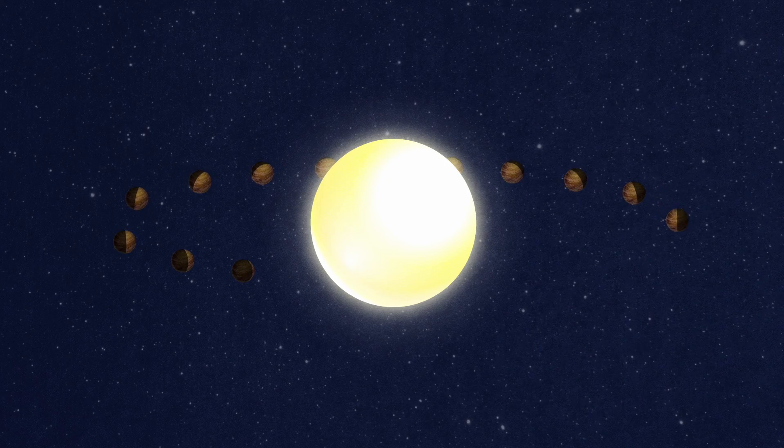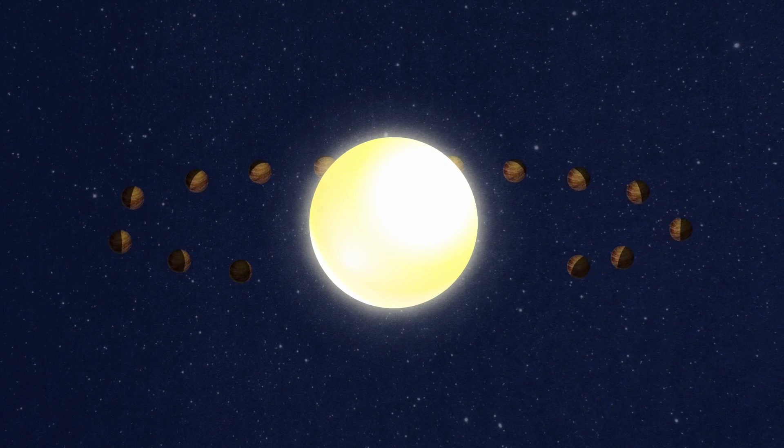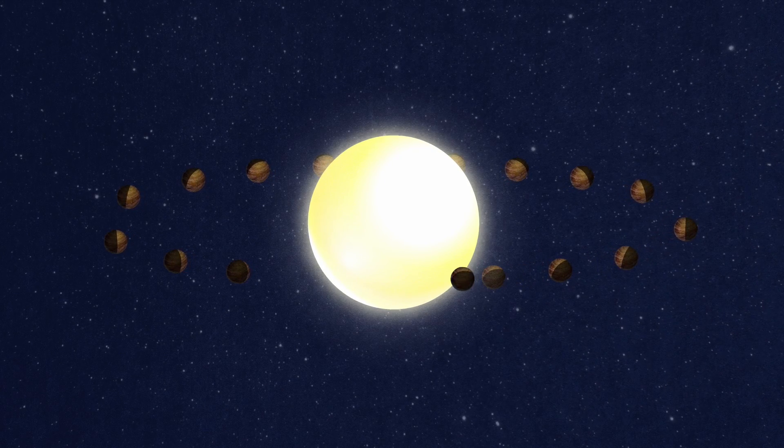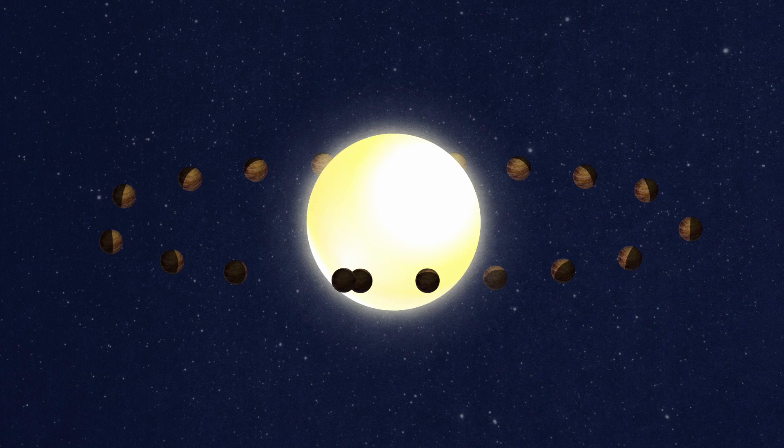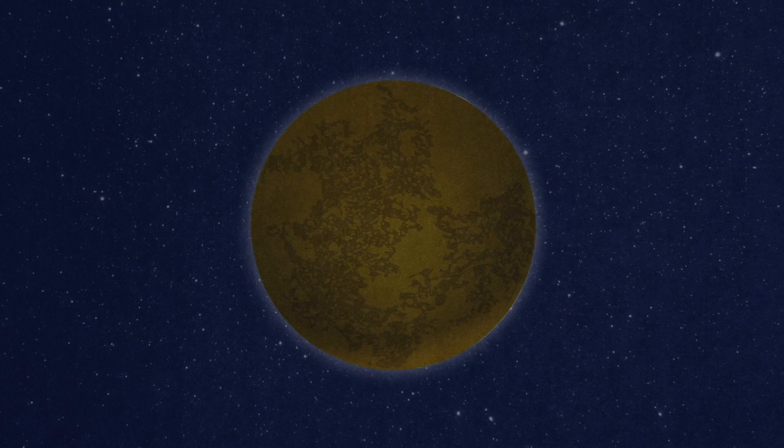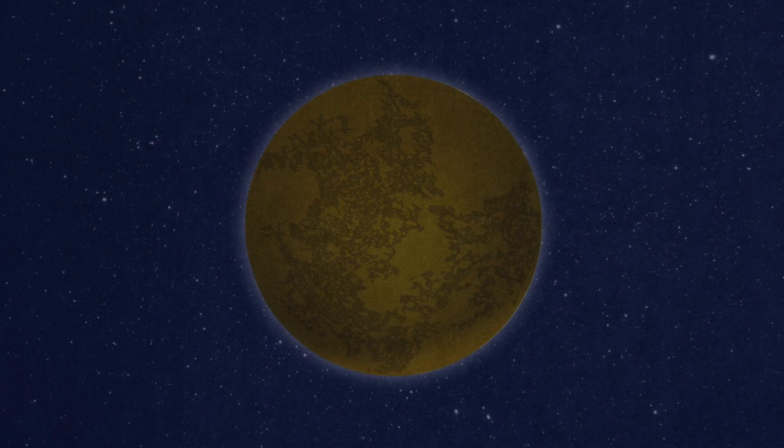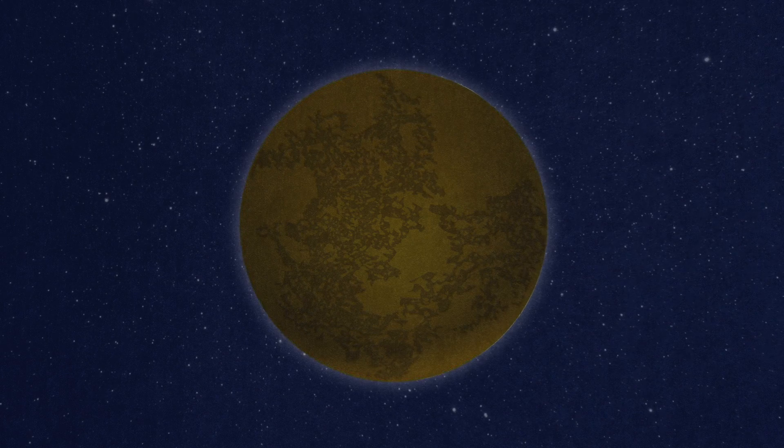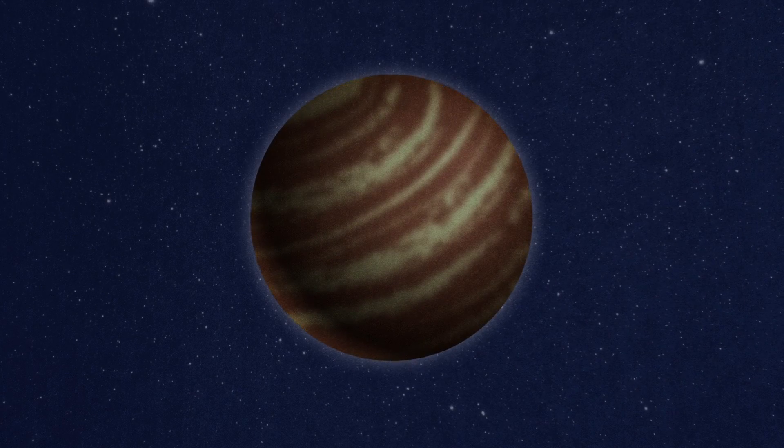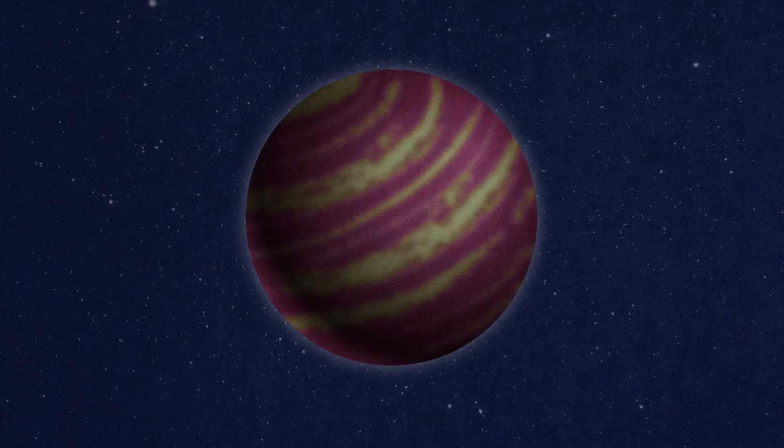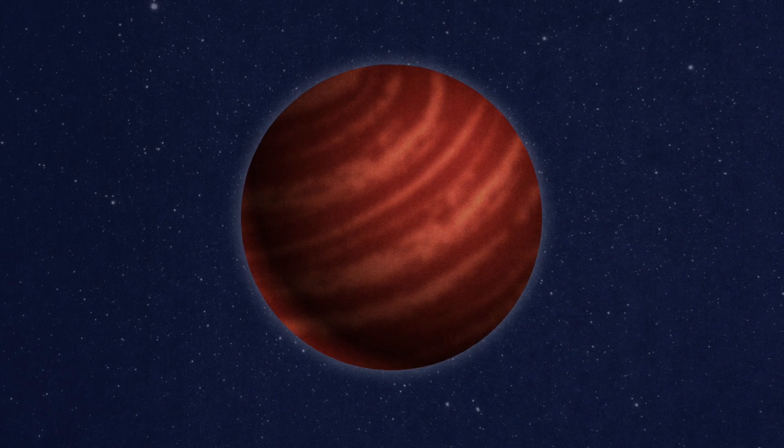These measurements are called phase curves and tell us the amount of light the planet reflects or absorbs—its albedo. A planet's albedo reveals important information about its atmosphere. It can answer questions like, does this planet have clouds? What are they made of? How hot is this world?